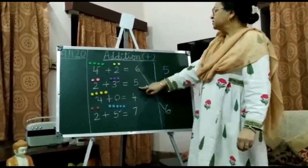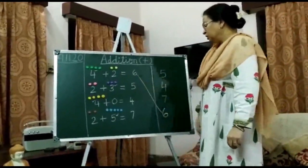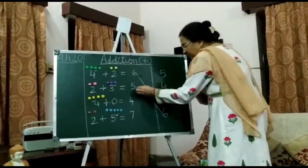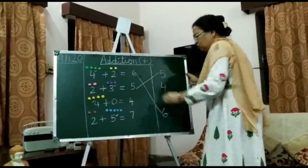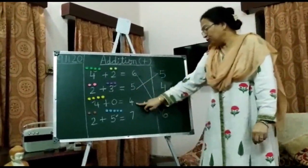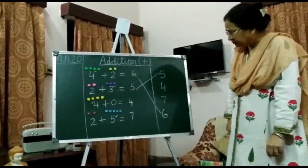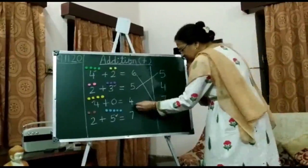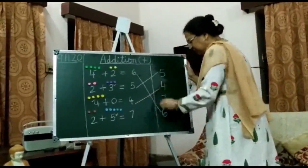The next answer is 5. Here is number 5, so we join this to number 5. Now the third answer is 4. Can you identify 4 here? Here it is, so we join it here.